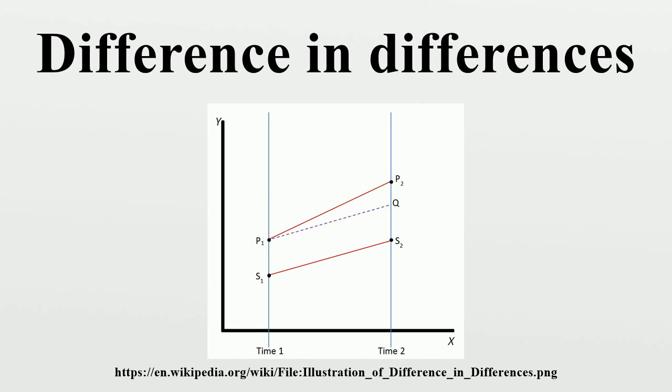Difference in differences requires data measured at two or more different time periods. In the example pictured, the treatment group is represented by the line P and the control group is represented by the line S. Both groups are measured on the outcome variable at time 1 before either group has received the treatment, represented by the points P1 and S1.